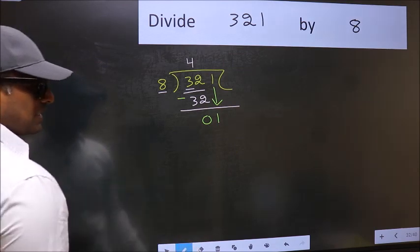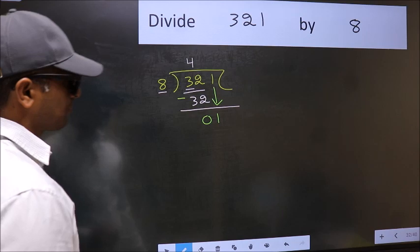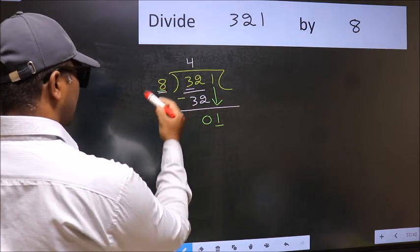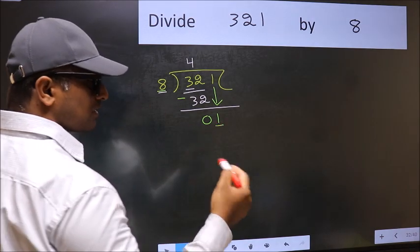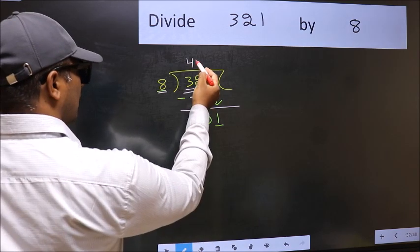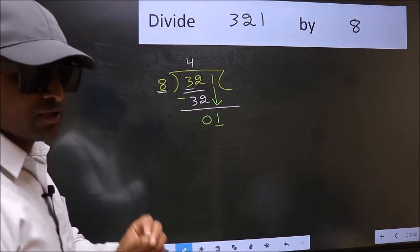After this step, the mistake happens. And the mistake is this. Here we have 1 and here 8. 1 is smaller than 8. So what many do is, they directly put dot and take 0.